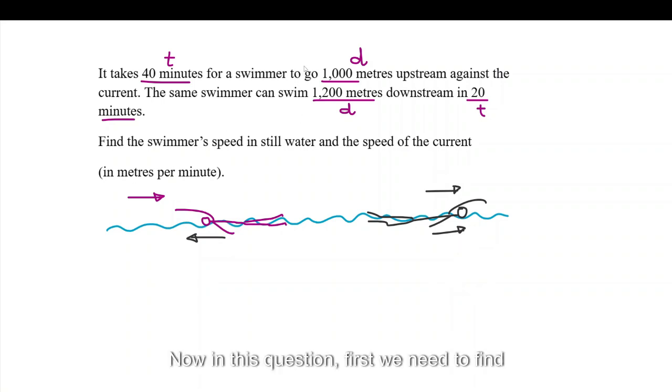Now, in this question first, we need to find the speed of the swimmer when the swimmer is going against the current. Now, this is pretty easy. The formula is speed is equal to distance over time. Now, the question says to use meters per minute. So, we are going to do that. Normally, it's meters per second or kilometers per hour or something like that. But the question says to go with meters per minute. So, let's do that.